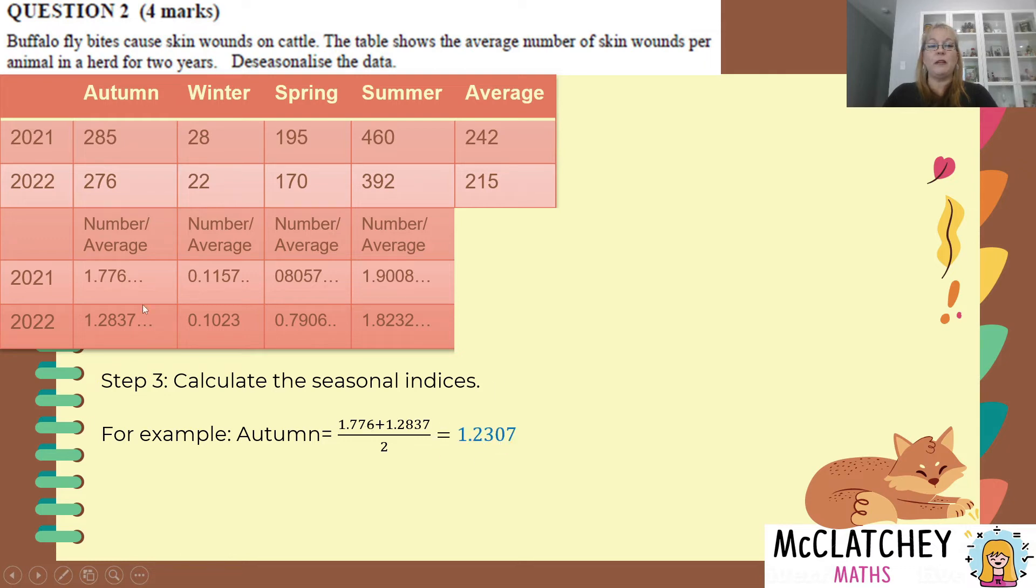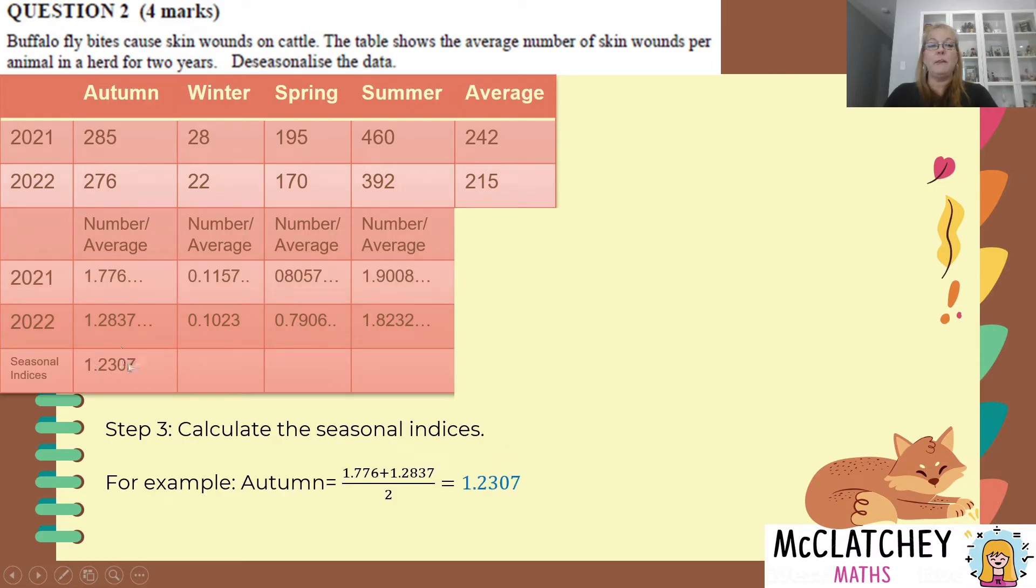So we've found out when we found the average of these two numbers, that seasonal index for autumn is 1.2307 and we're going to pop a new row in there. Okay. So for winter, we're going to repeat, add the two numbers together, divide by two, same for spring, same for summer. And these are our seasonal indices and we've achieved a third of four marks for determining the seasonal indexes.